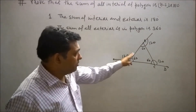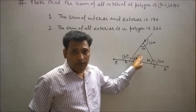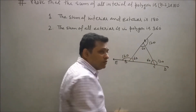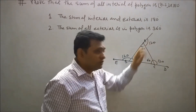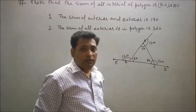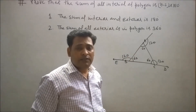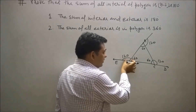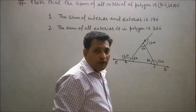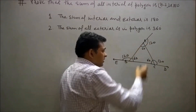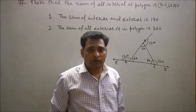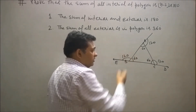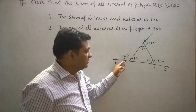The number of sides in a polygon is equal to the number of interior and exterior angles. So here the number of sides is 3, the interior angles are also 3, and the exterior angles are also 3. In any polygon, the number of pairs in which the sum of an interior angle and exterior angle is 180 degrees is equal to the number of sides. Here there are 3 such pairs, each summing to 180 degrees.